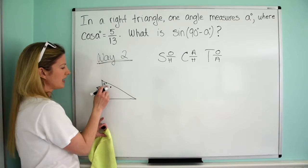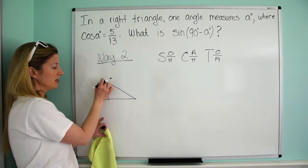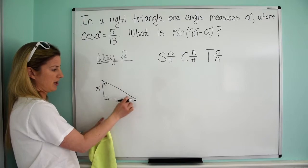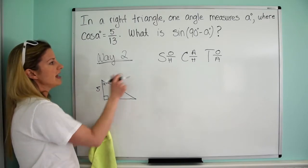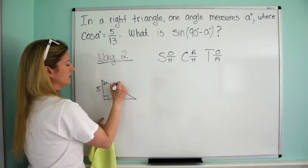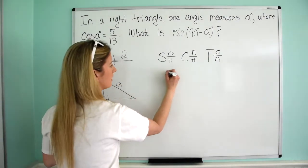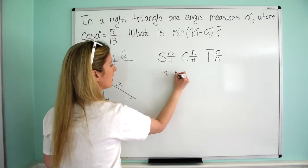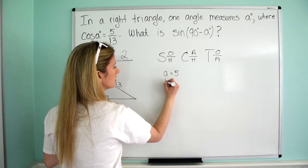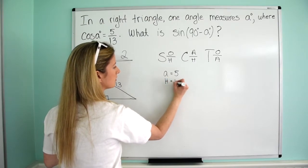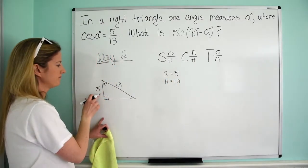So for cosine, adjacent over hypotenuse. So that means 5 is the adjacent side. Now remember, the adjacent side is the side that is not hypotenuse. You could theoretically call both of these adjacent sides, but this one's the hypotenuse. So the adjacent is the other. And then it's over hypotenuse. So 13 must be the hypotenuse. So we could write that out. A equals 5. H equals 13.